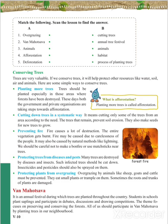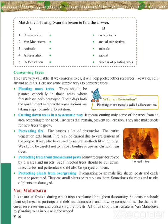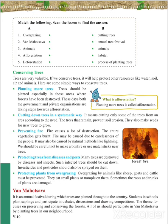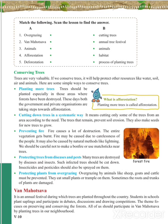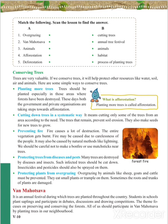Another method is preventing overgrazing. Overgrazing by animals like sheep, goats, and cattle must be prevented. These animals eat small plants or trample on them, destroying them by walking over them. Sometimes the roots and trunks of plants are also damaged by cattle, so we need to prevent that.